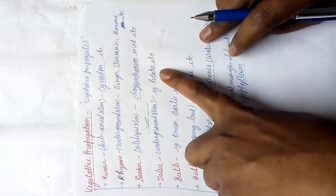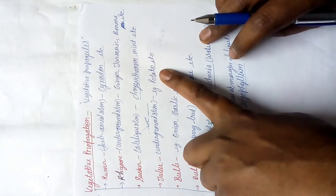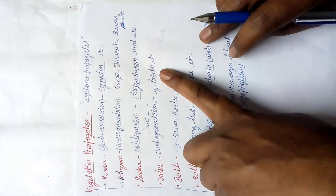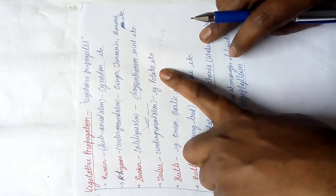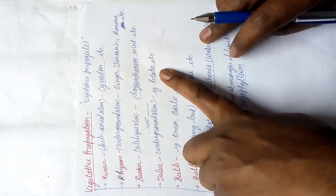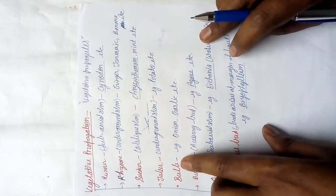The tuber is also an underground stem. The example is potato. Potato is a stem because you can see it start germinating when kept in moist places for four to six days, especially in October and November. Stem has nodes, and from nodes, auxiliary buds start arising.